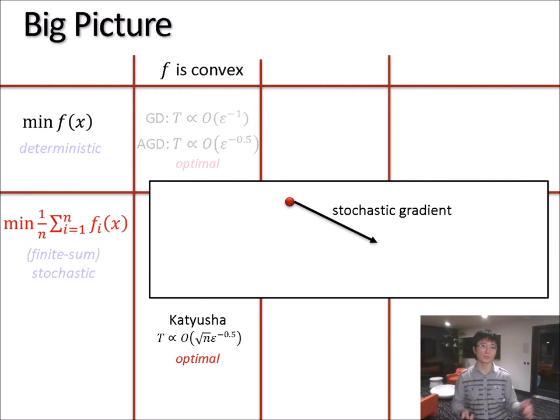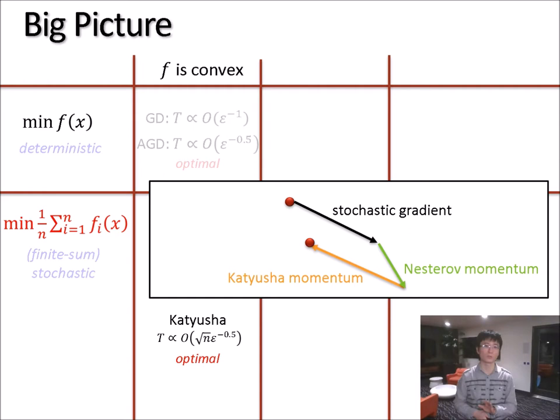So here is roughly speaking how it works. In each iteration of Katyusha, it first applies a stochastic gradient direction, it goes there, and then it applies a Nesterov momentum. So if you only do these two, it doesn't work. There are counterexamples. So what was novel in this prior work is that we applied a third thing...